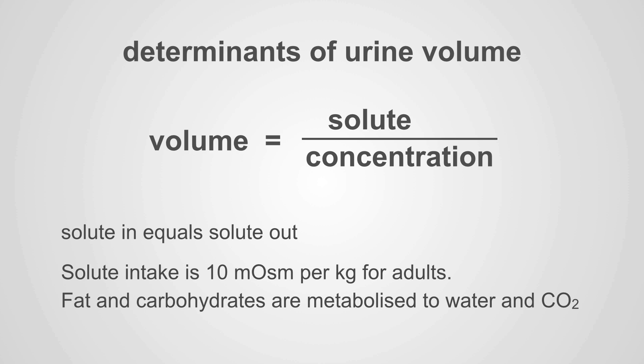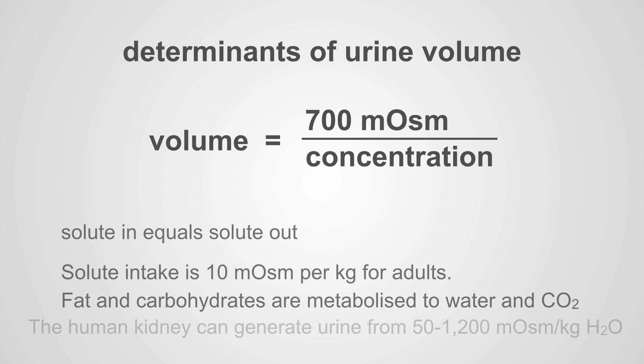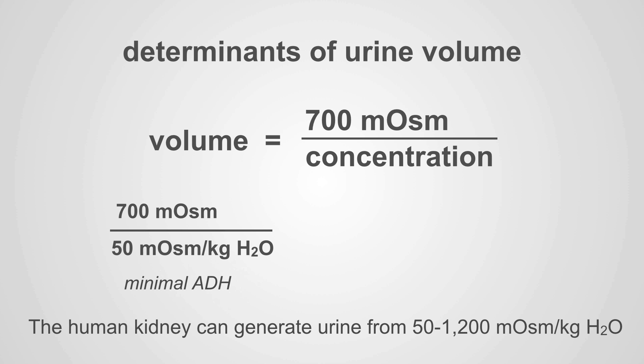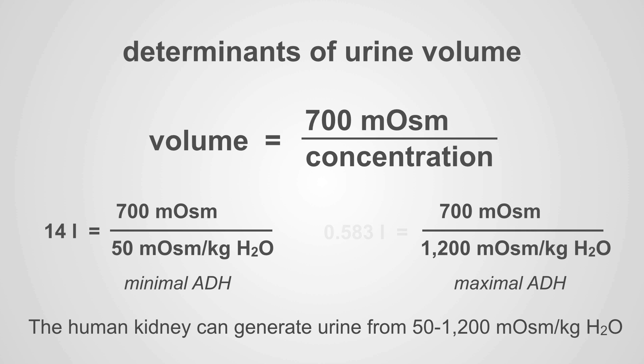The solute load for a day is about 10 mOsm per kilogram per day for adults — that's the solute we eat and that needs to be excreted. For a typical adult, that's 700 mOsm per day. Concentration ranges from 50 to 1200 mOsm/kg depending on ADH level. With minimal ADH, urine is very dilute at 50 mOsm/kg, resulting in 14 liters of urine per day. With maximal ADH, urine is maximally concentrated and only 0.5 liters per day is produced. That's your healthy range: drinking between half a liter and 14 liters of water a day allows excretion of the entire solute load while maintaining a normal sodium.